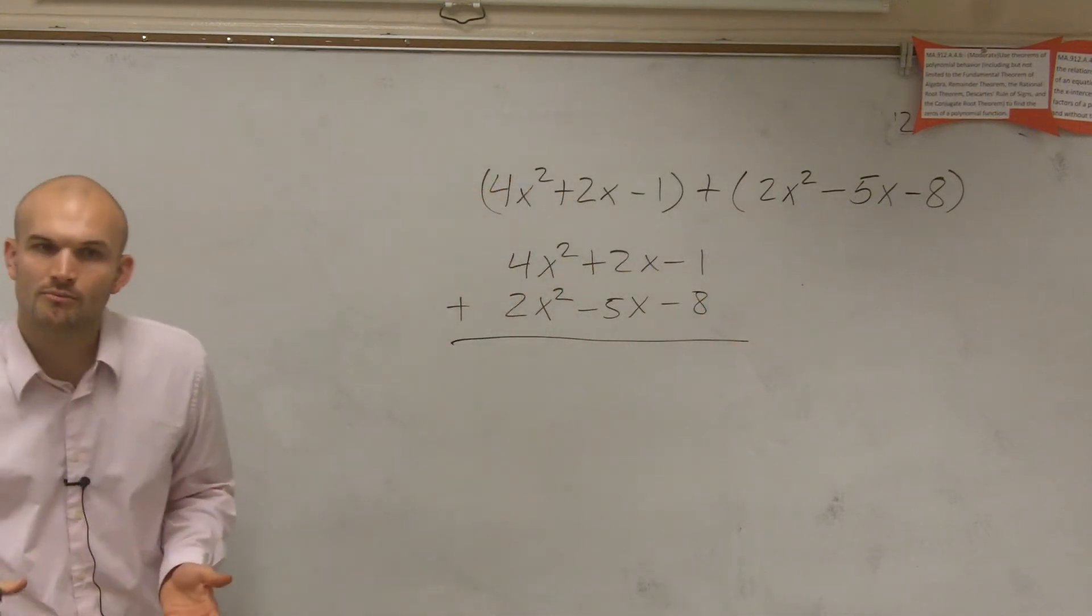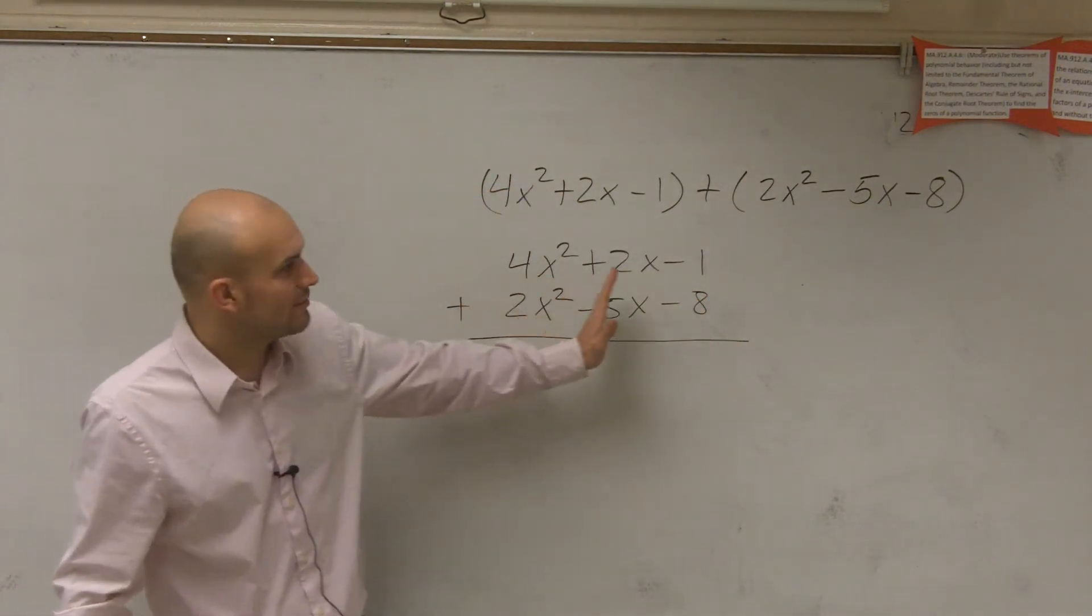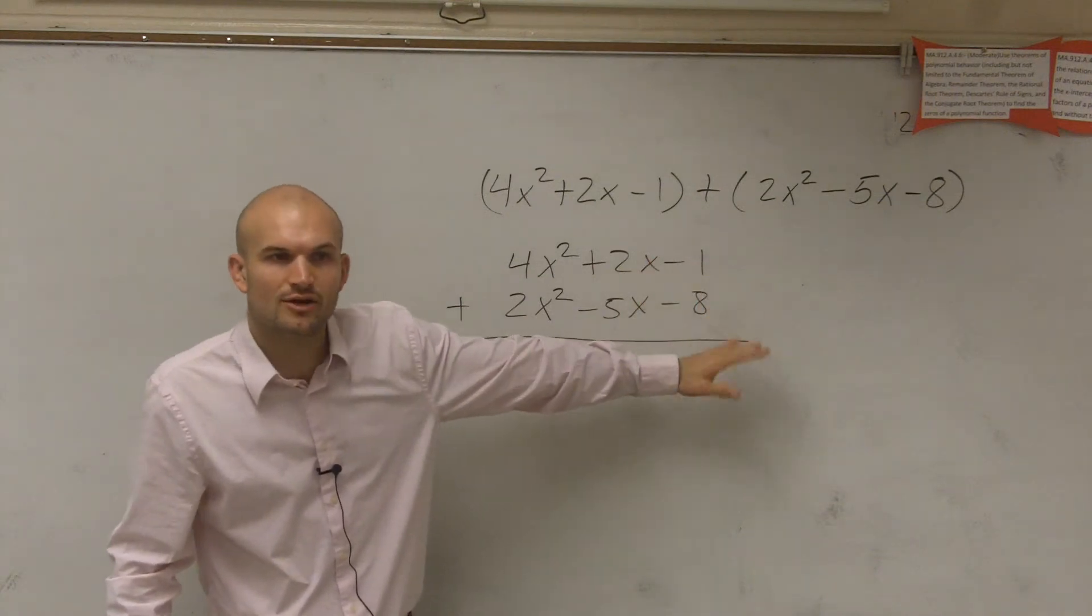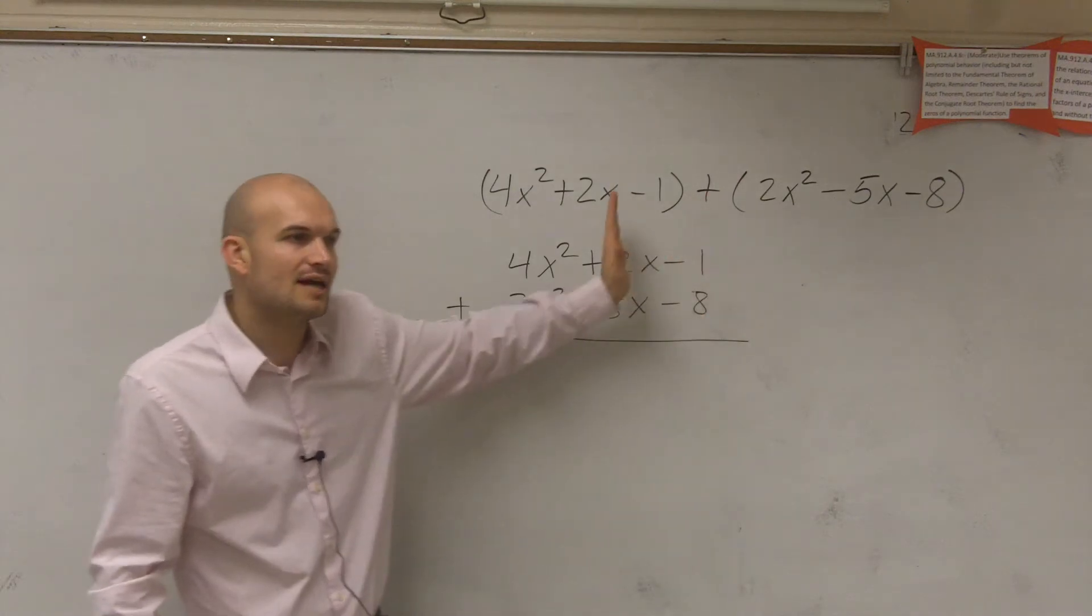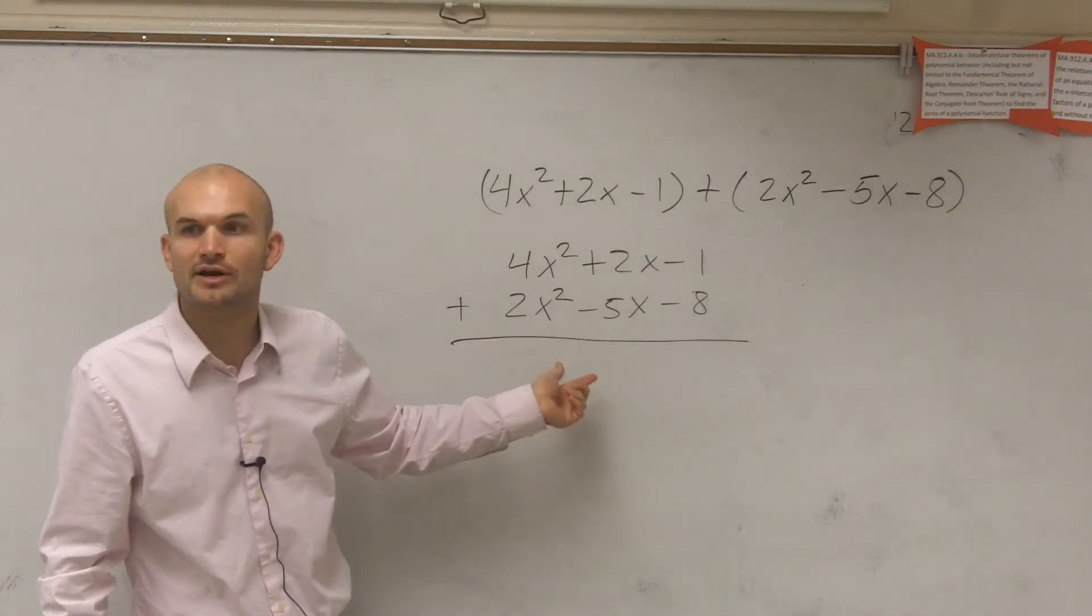What's helpful about using the vertical method is you make sure you rearrange your polynomials so that they're vertically aligned with the same terms. Each one of these columns has exactly the same variable factors.